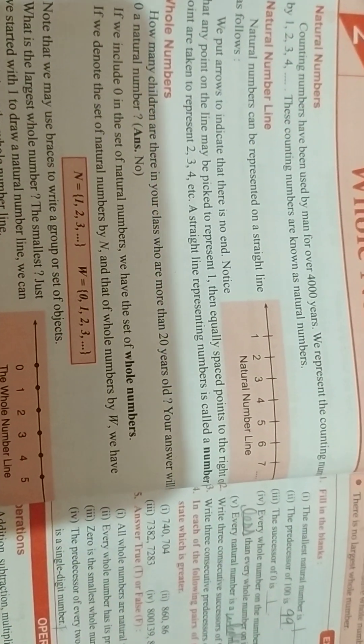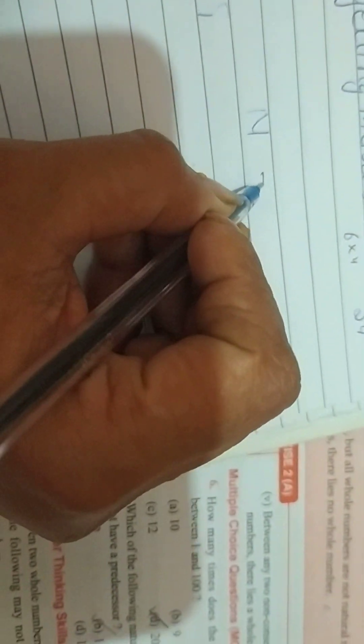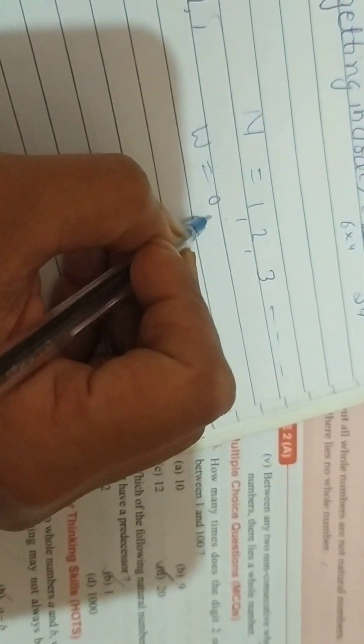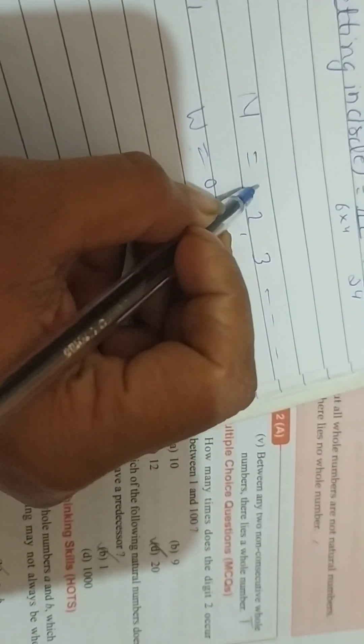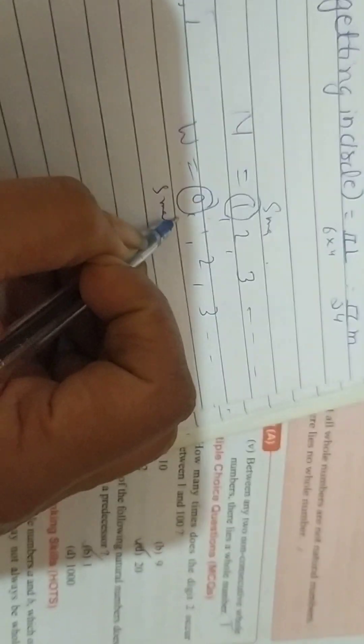So according to this natural starts from 1, 2, 3, whole 1, 2, 3. So it means the smallest natural number is 1 and smallest whole number is 0.